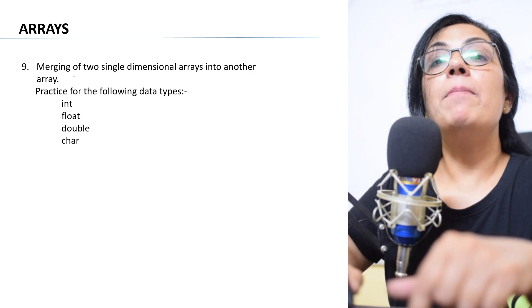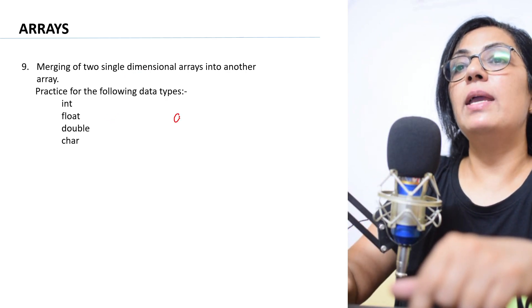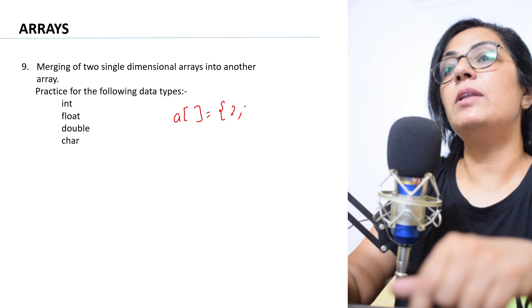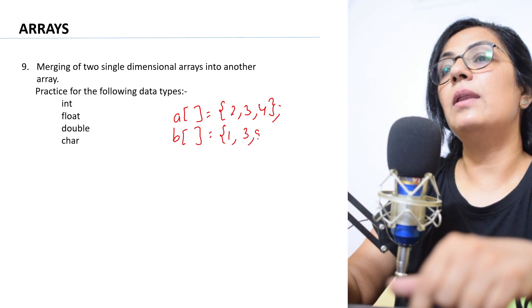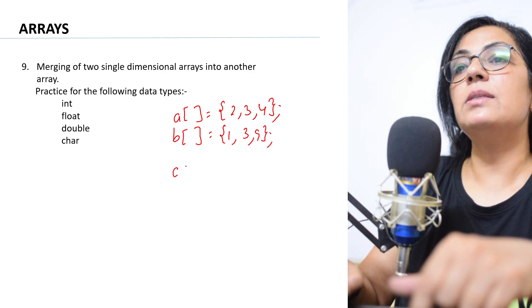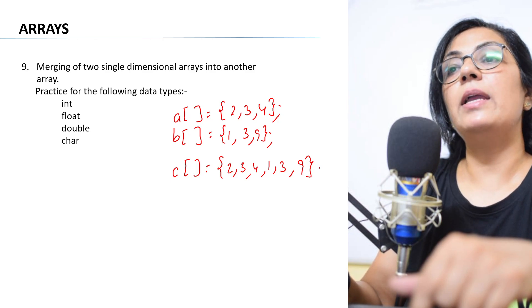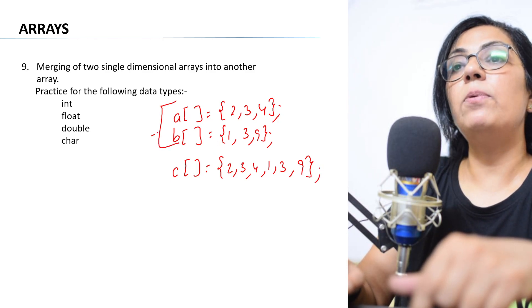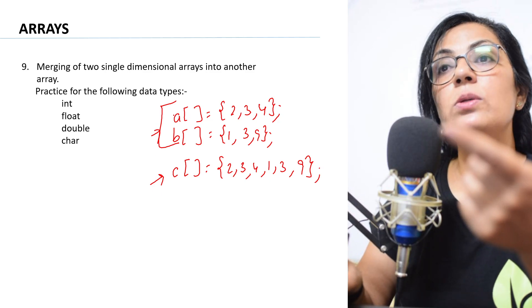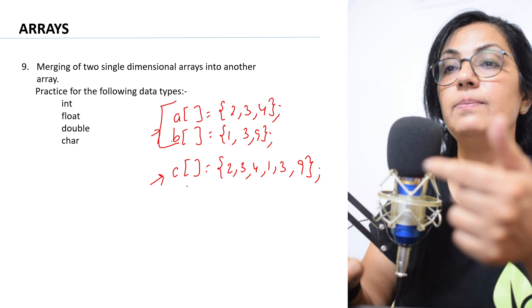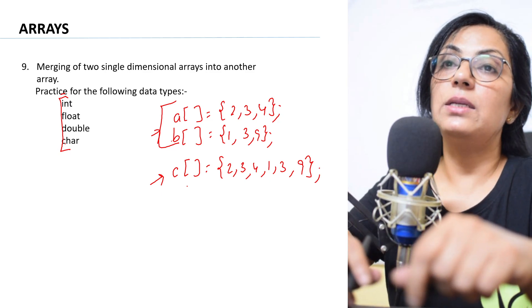Next: merging two single-dimensional arrays into another array. For example, if array A contains elements 2, 3, 4 and array B contains elements 1, 3, 9, then you need to merge them into array C which will contain 2, 3, 4, 1, 3, 9. You have to input two arrays from the user and process them to create the third merged array. Prepare this merging for character, double, float, and int data types.